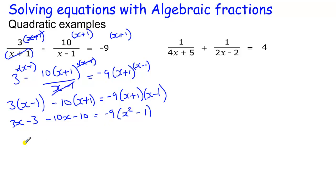So we get minus 9 lots of that. So tidy up here, we've got 3x minus 10x gives me minus 7x, minus 3 minus 10 is minus 13, equals minus 9 lots of x squared, minus 9 lots of minus 1 is plus 9.